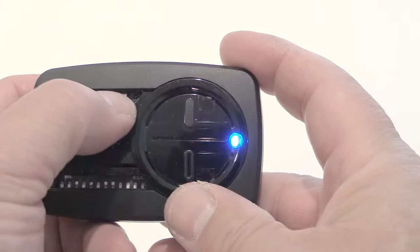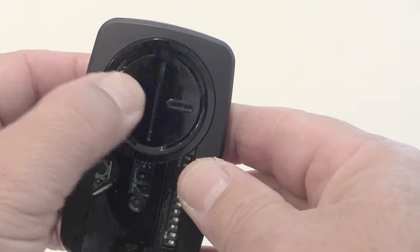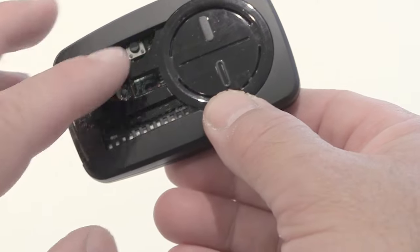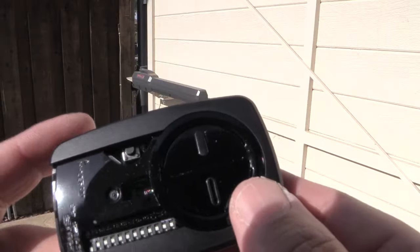Once you've done it 18 times, press and hold the program button inside. The light goes off and you can try it and it should work. Then you can move on to the next button. Same process for programming the next button. Change the dip switches and go into the program mode.